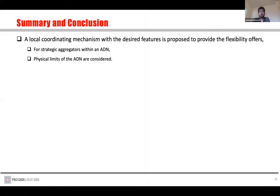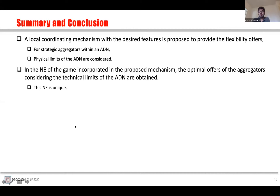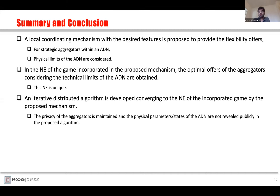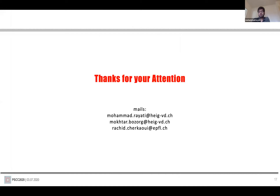To summarize: a local coordinating mechanism with desired features is proposed to provide flexibility of strategic aggregators within an ADN. The physical limits of the ADN are considered, the Nash equilibrium is unique, and an iterative distributed algorithm is developed that converges to the Nash equilibrium of the formulated game. The privacy of the aggregators is maintained in the proposed algorithm. Thank you for your attention — if anyone has questions, you can reach me by email or I can answer your questions right now.